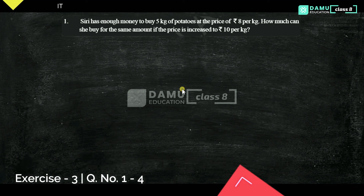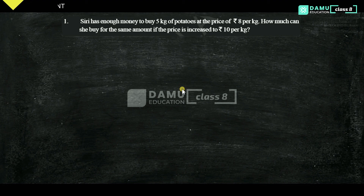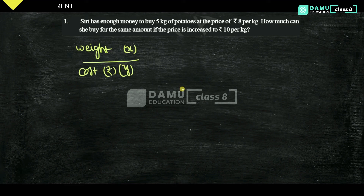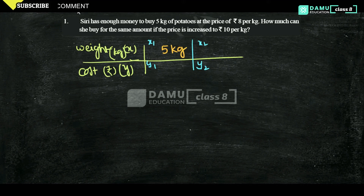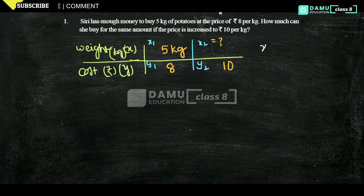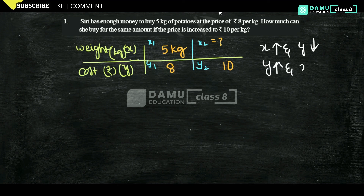If the same amount is there and cost is increasing, then the number of kg will obviously decrease. Let's take weight of the potatoes as x (in kg) and cost of the potatoes as y (in rupees). We have x1, y1 and x2, y2. Weight x1 is 5 kg, each kg price y1 is 8 rupees, and it is increased to y2 equals 10 rupees. If weight (x) is increasing, cost increases; and if x decreases, weight decreases — so x is inversely proportional to y.